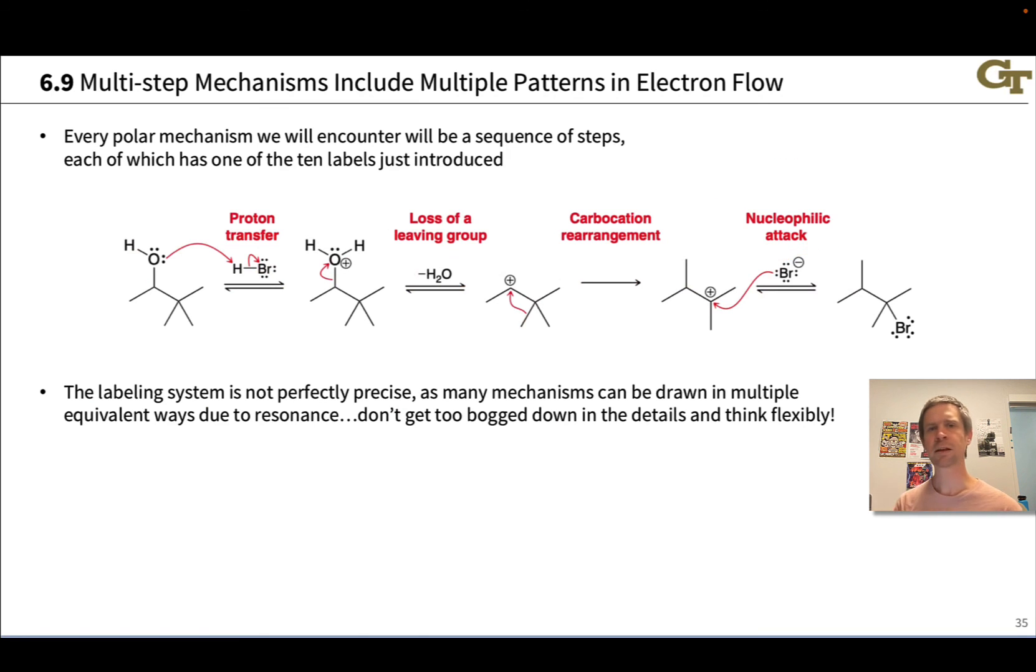And this second point is important to keep in mind—that flexibility with the labeling system and how we think about describing elementary steps is key. Particularly, resonance can cause a lot of confusion. Curved arrows that just show the generation of a particular resonance form aren't really essential to what's going on with electron flow, so don't get too bogged down in the details. Particularly when alternative resonance forms are involved, you'll want to think flexibly and try to see—in particular, one strategy that can help here is, where are the sigma bonds made and broken? Focusing on where sigma bonds or single bonds are made and broken will often lead you to the right elementary step label. For example, noticing here I'm breaking an H-Br sigma bond, there's a good sign—that's a good sign that this is a proton transfer elementary step.